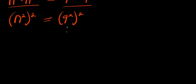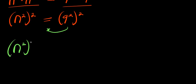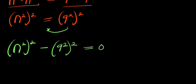Now at this point we can move the right side over, so it becomes minus. We have n power 2 raised to the power of 2 minus 9 power 2 raised to the power of 2, and this equals 0.